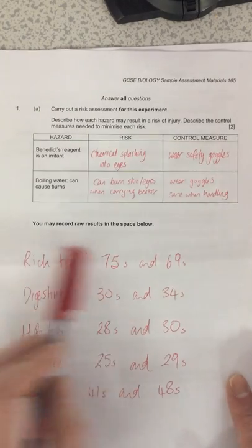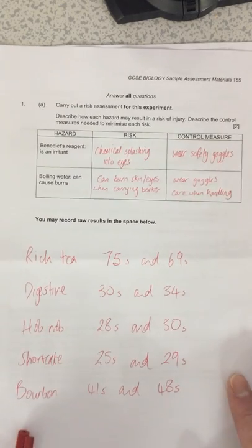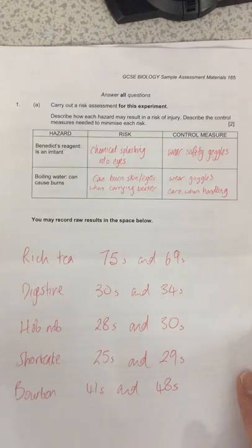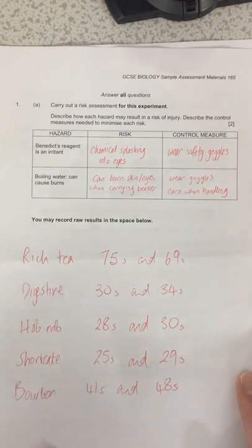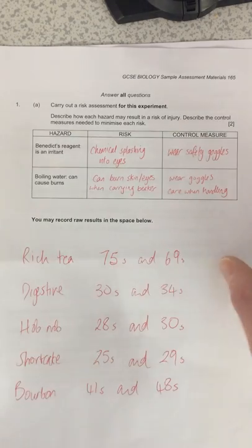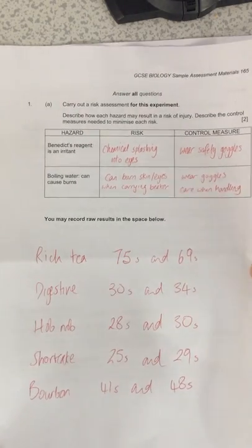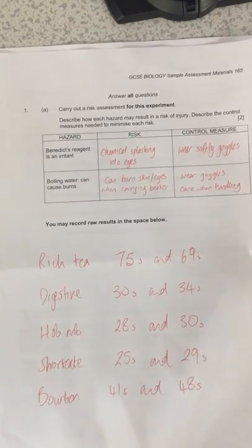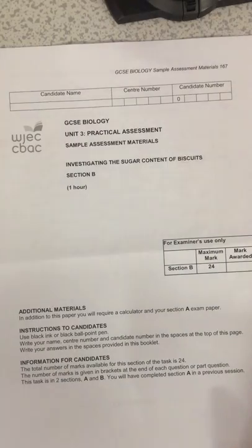You get some space just to record your raw results. If the practical might take a little bit longer, they won't make you draw the table — they just want you to jot down your results. Here I've got five different types of biscuits and two results for each one showing how long it took for the colour to turn from blue to brick red.